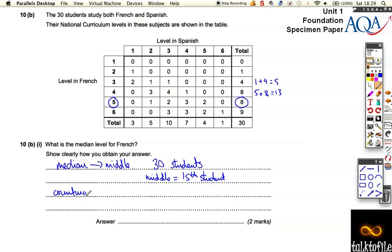So, the middle student is the 15th student. And then, if you just say something like, counting down the 15th student. The 15th student had level 5. So, the median is level 5. It's important to explain what you do. So, working out that there's 30 students and the 15th student you need is the middle person, and then actually doing it and getting it right, gets you the second mark.